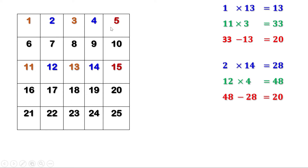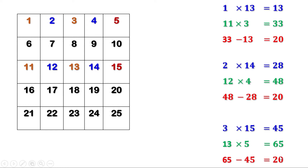Now let us take another square of nine numbers: 3, 4, 5, 8, 9, 10, 13, 14, 15. The numbers at the corners are 3, 5, 13, and 15. The diagonal products are: 3 into 15 is 45, and 13 into 5 is 65. The difference between them is 20. So if you take a square of nine numbers and find the diagonal products of the numbers at the corners, the difference is always 20.